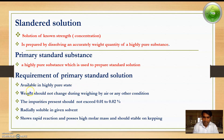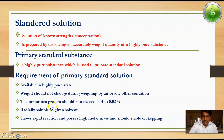These are the some requirements for the primary standard substance. It is easily available in a highly pure state. The weight should not change during weighing due to air or other conditions such as temperature. The impurities present in the substance should not exceed 0.01 to 0.02%. It is readily soluble in the selected solvent, shows rapid reaction, possesses high molar mass, and should be stable on keeping.